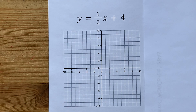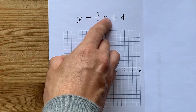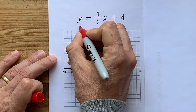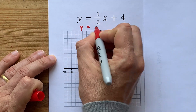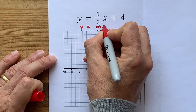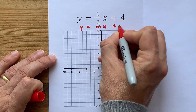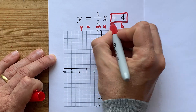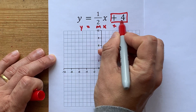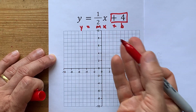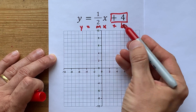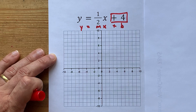You want to graph y equals 1 half of x plus 4? This equation is already in y equals mx plus b form. The number added or subtracted from the end — plus 4 — is your b, your y-intercept.